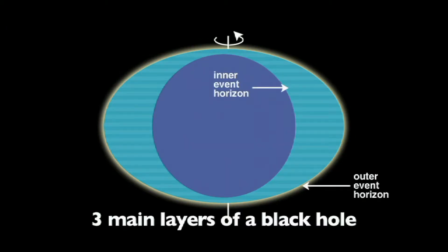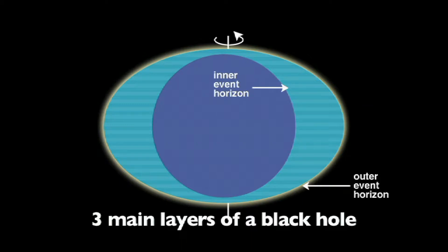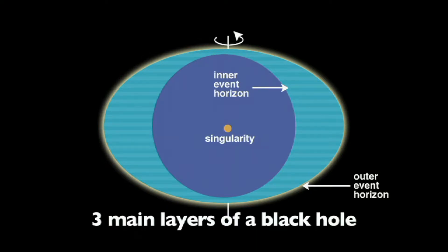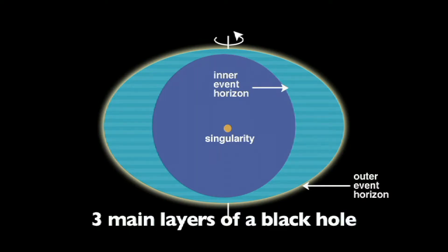The next layer is called the inner event horizon, and nothing can escape from this area. Finally, the center of the black hole is called a singularity. The singularity is where the black hole's gravity is the strongest.